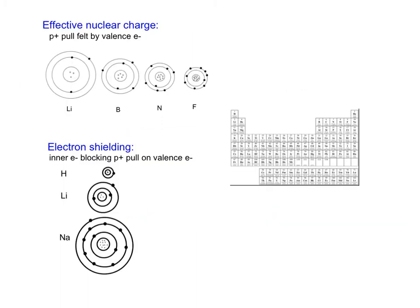The two main things that explain your trends are effective nuclear charge and electron shielding. Effective nuclear charge will explain all the trends as you go across the periodic table. Electron shielding will explain all the trends as you go down the periodic table.